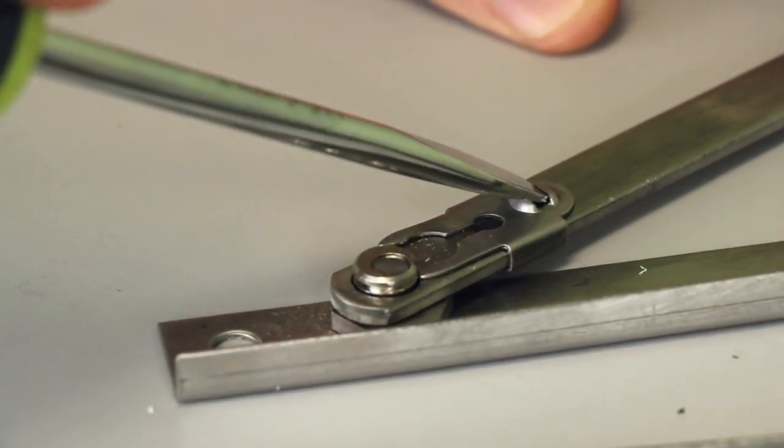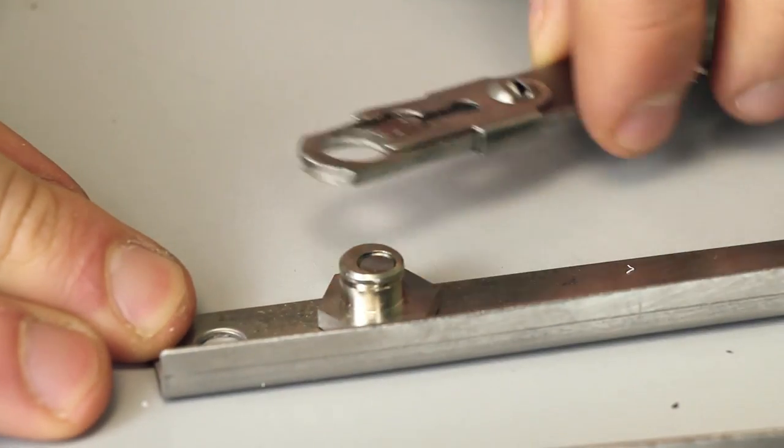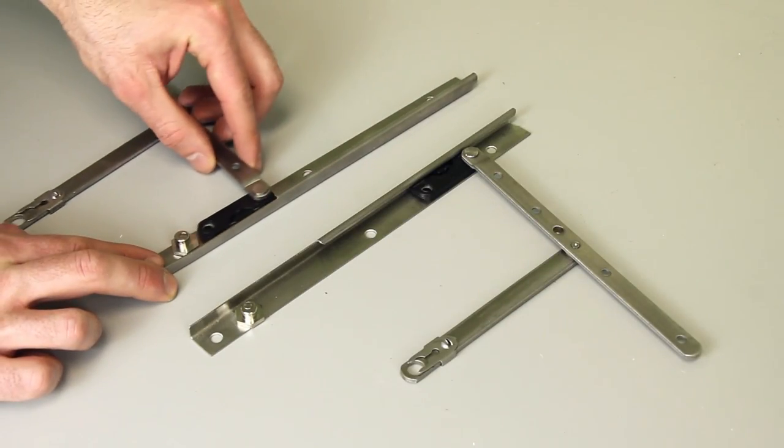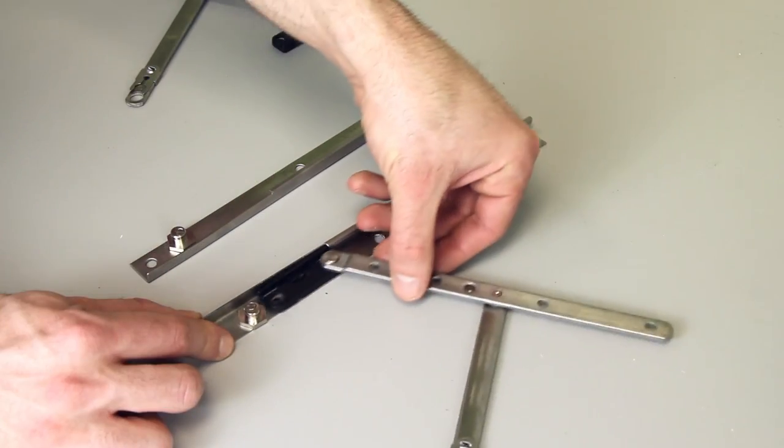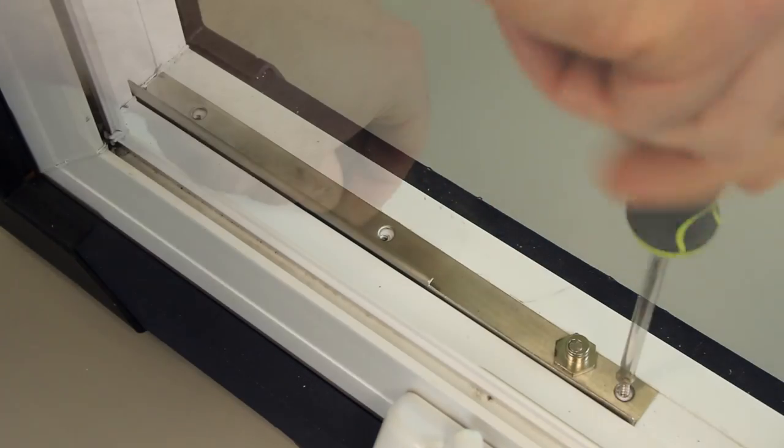Before installing your new hinge set, separate the two pieces, and then fasten the stationary parts to both the bottom and top of your window frame.